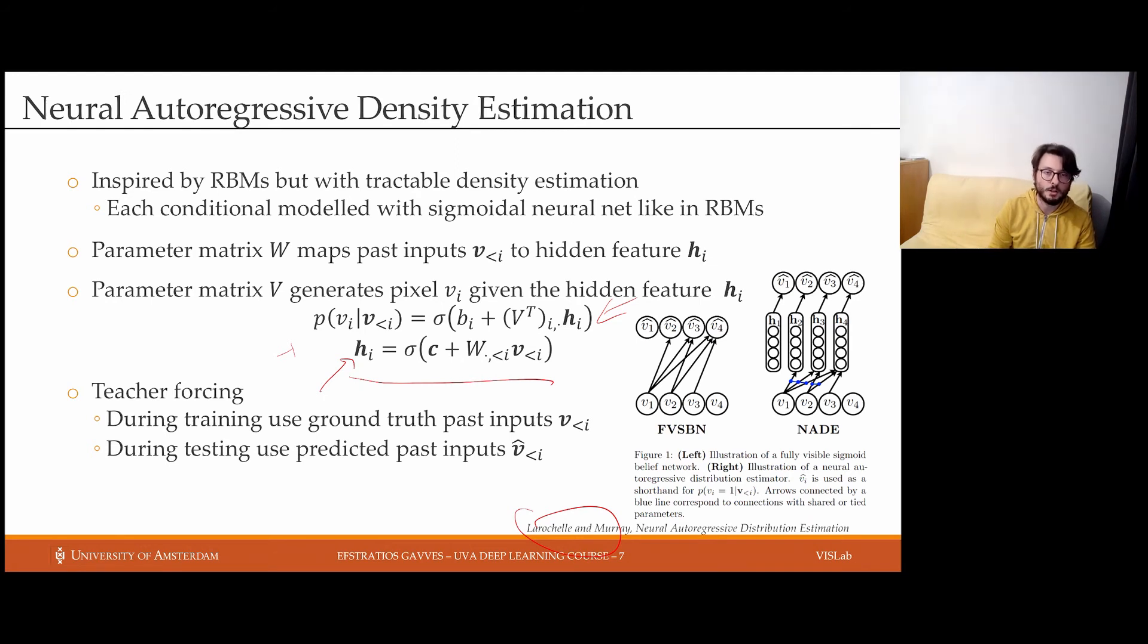Specifically, it samples a future output given a past hidden state. Notice here that for computing the hidden state, the input relies only on past observations. So our observations v are only taken into account if they are smaller than i, and i is the future pixel or whatever output dimension that we are interested in generating. But also, the parameter matrix W, only that part of parameter W is used, which relies on smaller than i dimensions. So basically, we are using only part of the parameter matrix, which is relevant for our past observations. We don't use the future dimensions of the parameter matrix W.